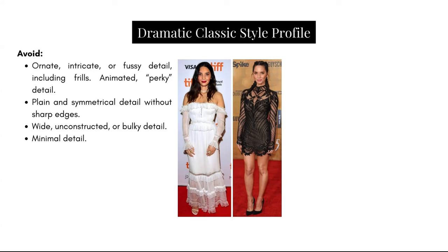Avoid ornate, intricate, or fussy detail including frills. Olivia Munn in that first dress — again way too intricate, ornate, youthful, girly, and soft. It juxtaposes against her and looks like she's wearing somebody else's clothes. Avoid animated and perky detailing — that sort of embroidery on the second layer of that dress feels very perky, too youthful. And she styled her hair in pigtails, which again creates an even more youthful look in a way that reads as childish.